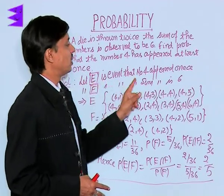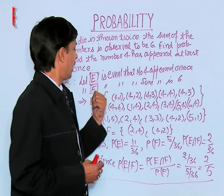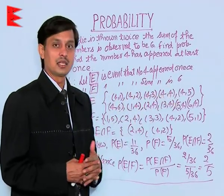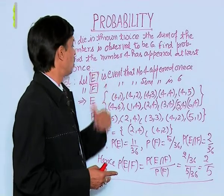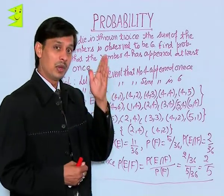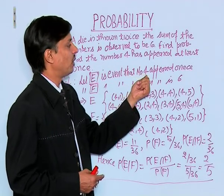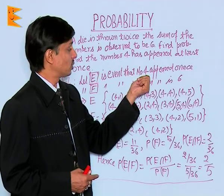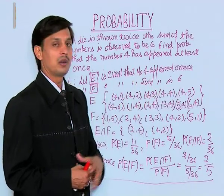Let us suppose E is the event that the number 4 appeared at least once, and F is the event of getting sum 6. We want to calculate P(E|F), the probability that the dice shows 4 at least once, provided the sum is observed as 6.